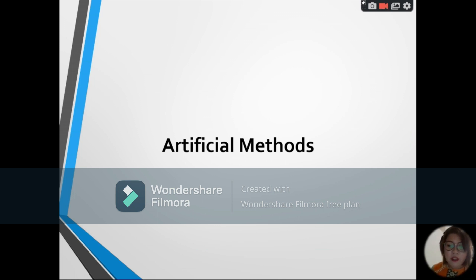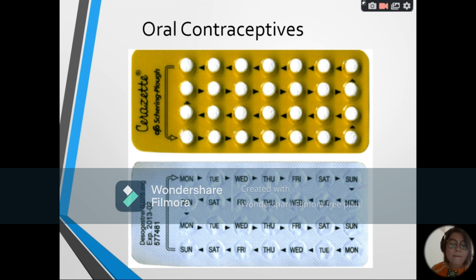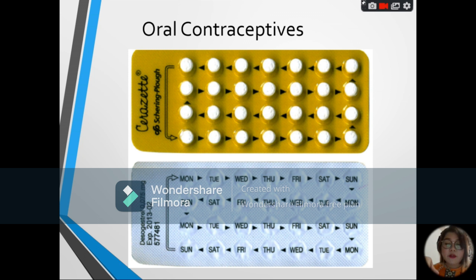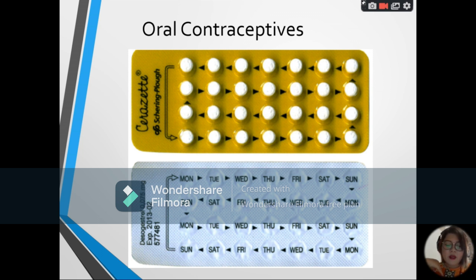Let us now proceed with the different artificial methods. The first one is oral contraceptives, also known as the pill. This contains synthetic estrogen and progesterone. The estrogen suppresses the follicle-stimulating hormone, or FSH, and also the luteinizing hormone, or LH, to prevent ovulation. Moreover, progesterone decreases the permeability of the cervical mucus to limit the access of the sperm cell to the egg cell. It is suggested that the woman take the first pill on the first Sunday after the beginning of menstruation, or as soon as it is prescribed by the doctor.